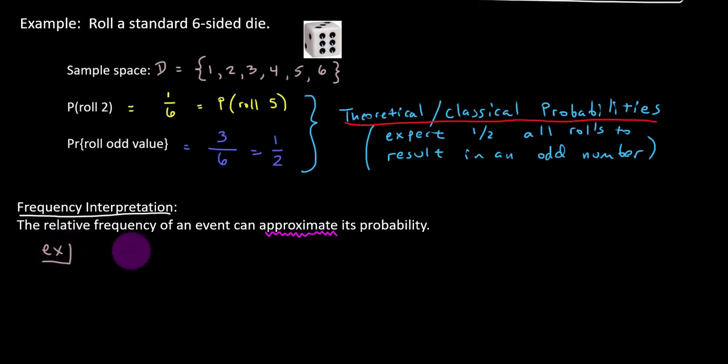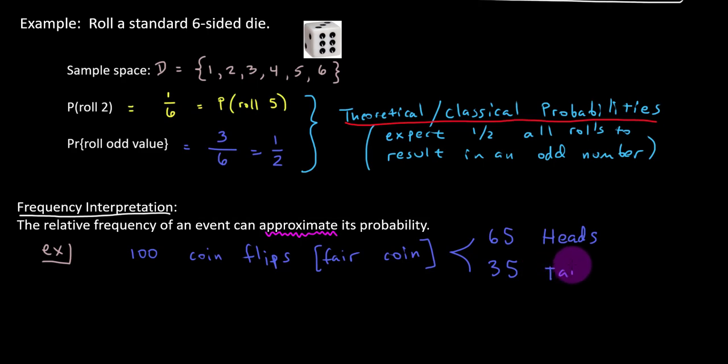Let's suppose there are, you got some time on your hands and you're going to do a hundred coin flips, a hundred coin flips of a regular fair coin. Okay, and let's suppose in those 100 coin flips that 65 of them resulted in heads and the remaining 35 resulted in tails. Cool.